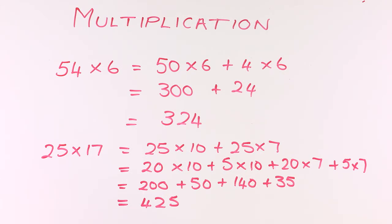25 times 10 can be renamed to be 20 times 10 plus 5 times 10, while the second part of our equation, 25 times 7, can be renamed to be 20 times 7 plus 5 times 7. We can then find answers to each part. So 20 times 10 would be 200, 5 times 10 would be 50, 20 times 7 would be 140, and 5 times 7 would be 35.